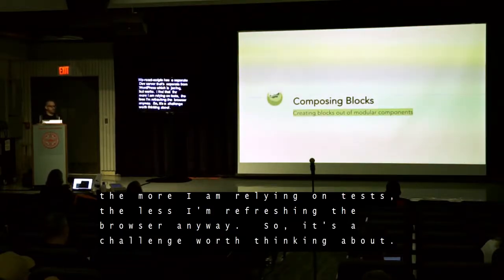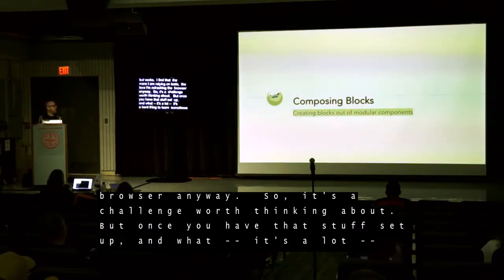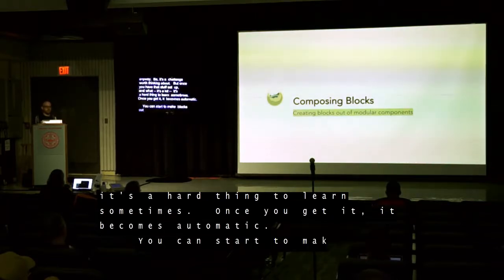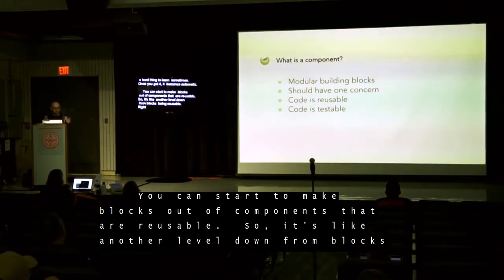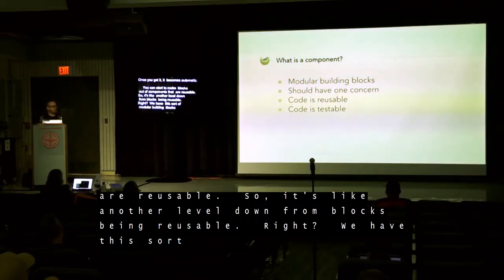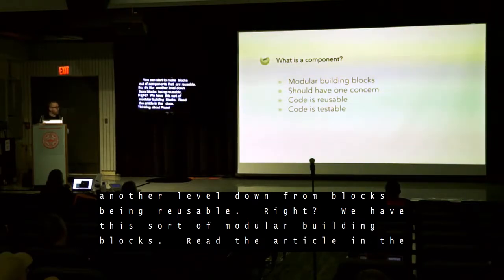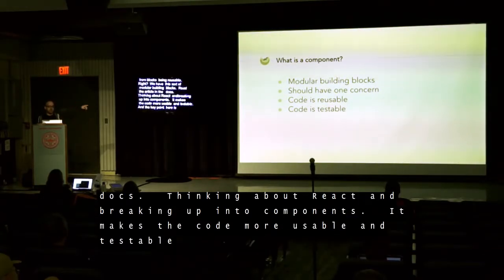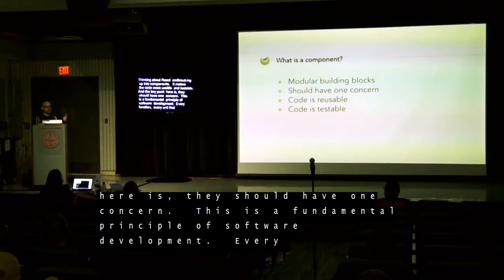Once you have that stuff set up — it's a lot, it's hard to learn, but once you get it, it becomes automatic — you can start to make blocks out of components that are reusable. It's like another level down from blocks being reusable. Read the article in the docs, 'Thinking in React,' where they talk about how to break up into components. It makes code more reusable and more testable. The key point is they should have one concern — every unit we're looking at should have one reason to change.